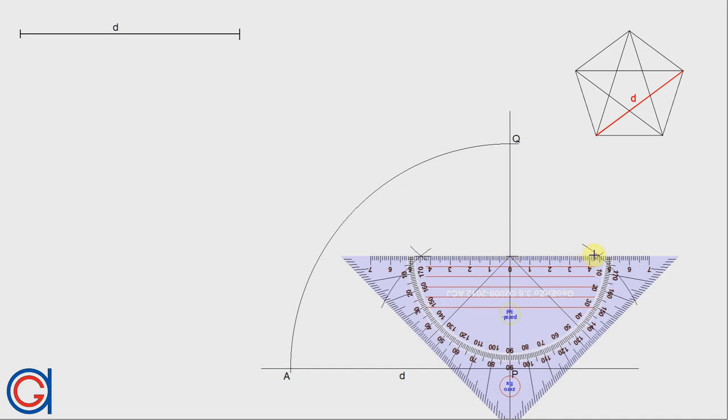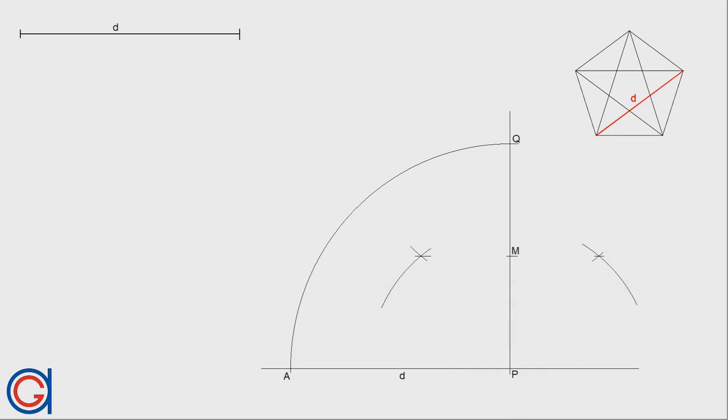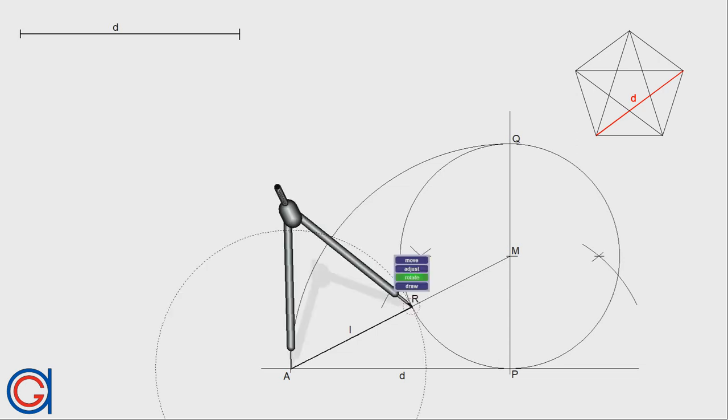The next step, setting our compass on the midpoint M and with a radius MP, we are going to draw a circle. To continue, we are going to join point A with M. Where this line segment cuts the circle, we will call point R. Line segment AR is going to be the length of the side of the regular pentagon where the five-pointed star is going to be inscribed in.